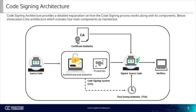Code signing architecture provides a detailed explanation on how the code signing process works along with its components. The code signing system, or CSS, is the first and most important component of code signing architecture. The code signing system signs the submitted code using a digital signature and authenticates the user. The digital signature is generated by CSS using private signing keys and certificates. It is highly important to secure the private signing key and certificate from misuse and unauthorized access.